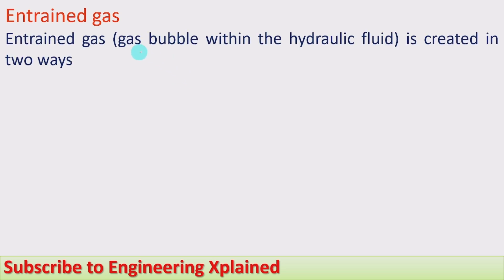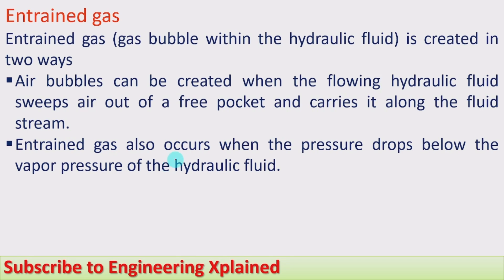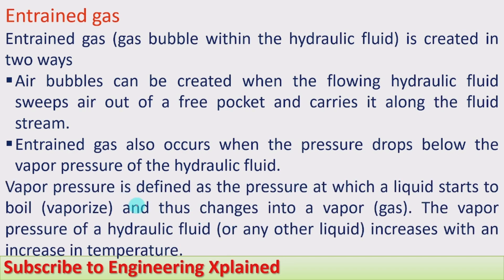The next type is entrained gas. A gas bubble within the hydraulic fluid is created in two ways. Air bubbles can be created when the flowing hydraulic fluid sweeps air out of the free pocket and carries it along with the stream. Entrained gas also occurs when the pressure drops below the vapor pressure of the hydraulic fluid, causing vaporization of the fluid and forming entrained gas.